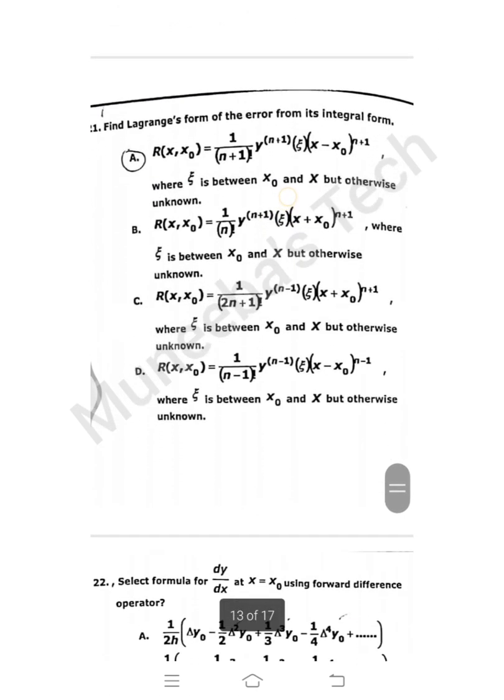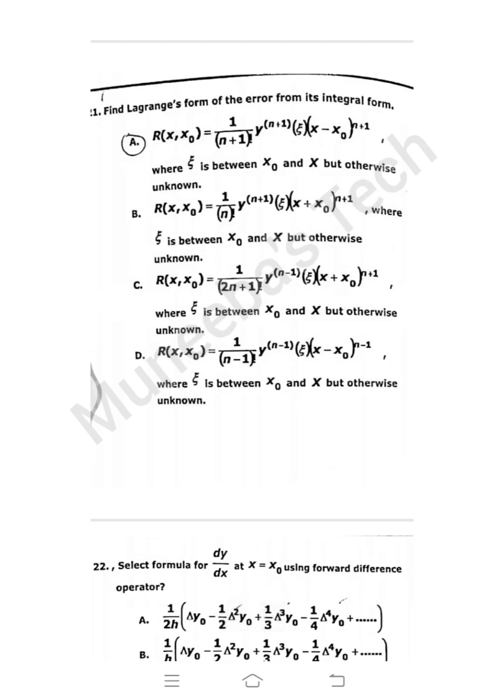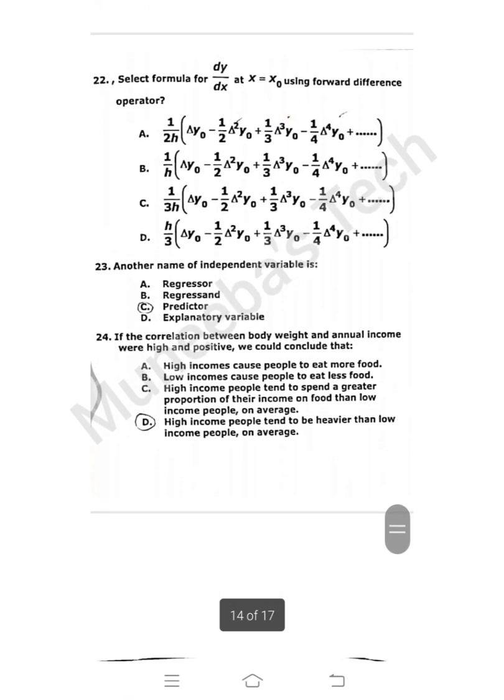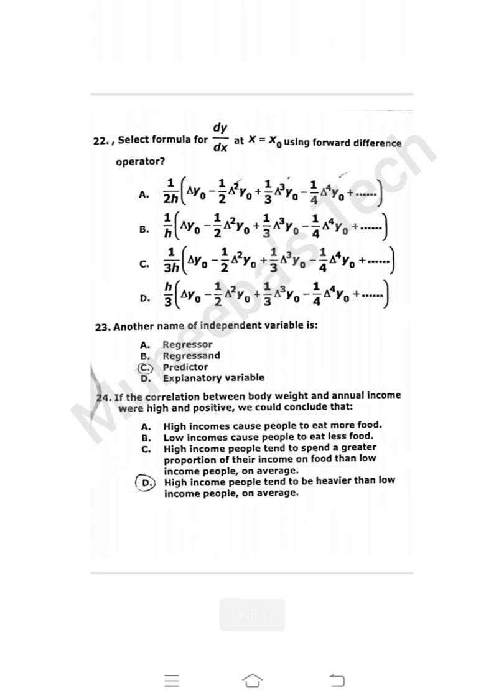Question 21: Find Lagrange form of the error from its integral form. You can check Lagrange formula, which is the error from its integral form. Option A is correct. Question 22: Select formula for dy/dx at x = x₀ using forward difference operator. I have no idea, I never learned this forward difference operator. If anyone knows, most welcome you can tell me. Question 23: Another name of independent variable is predictor.